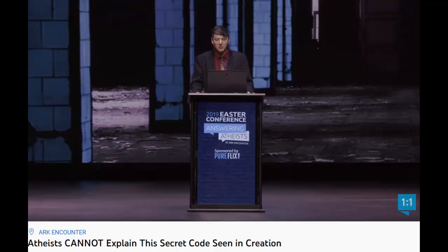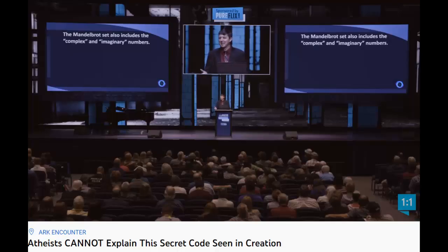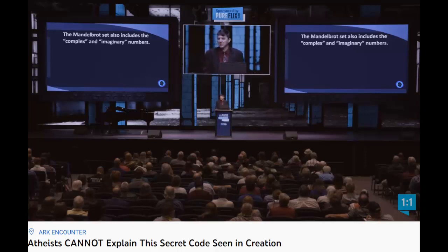Another complication is that the Mandelbrot set also includes what are called complex and imaginary numbers. An imaginary number is a number that when you square it, you get a negative number. That's a little hard for us to understand, and so they call them imaginary — it's just a name. I hate that they have that name, because it makes it sound like they don't exist, like they're fabricated. No, they do exist. Imaginary numbers do exist.